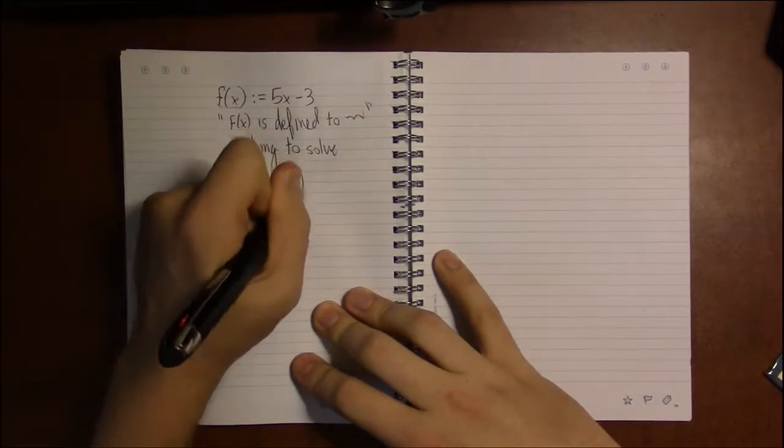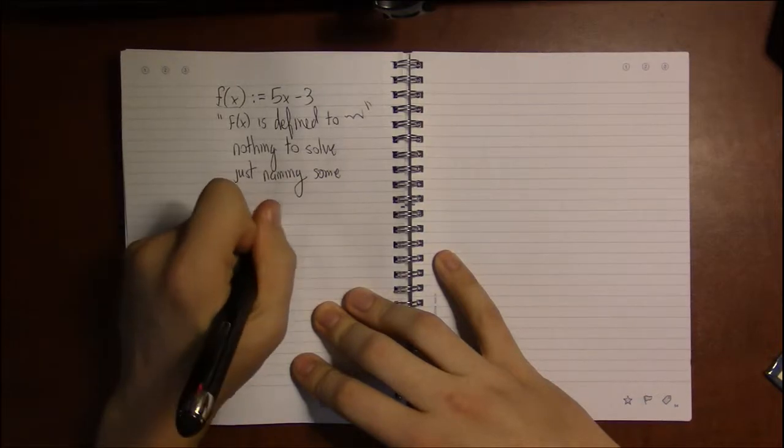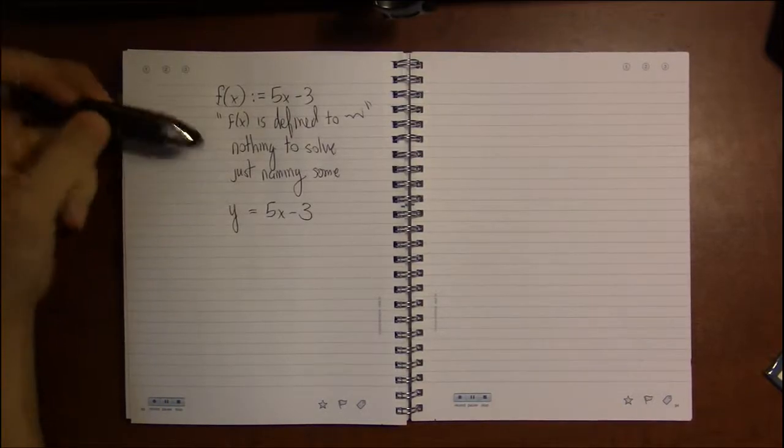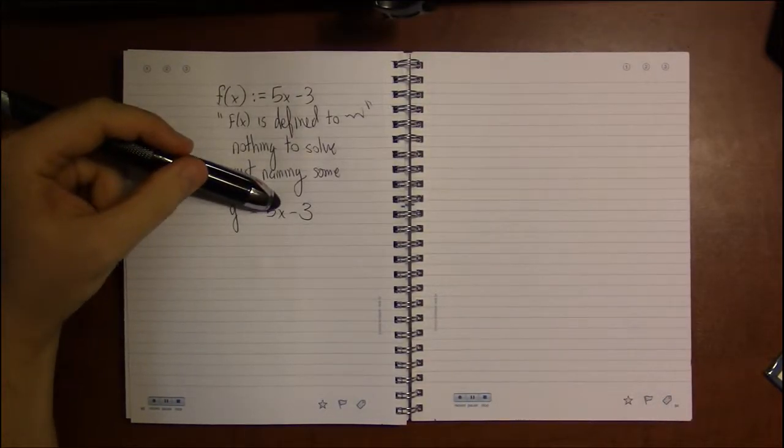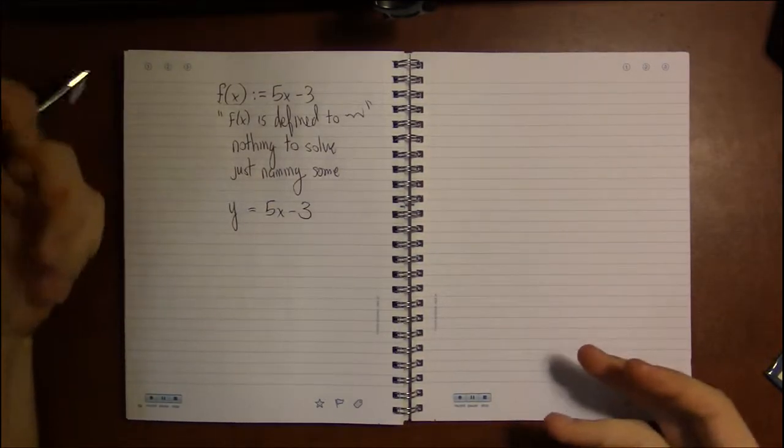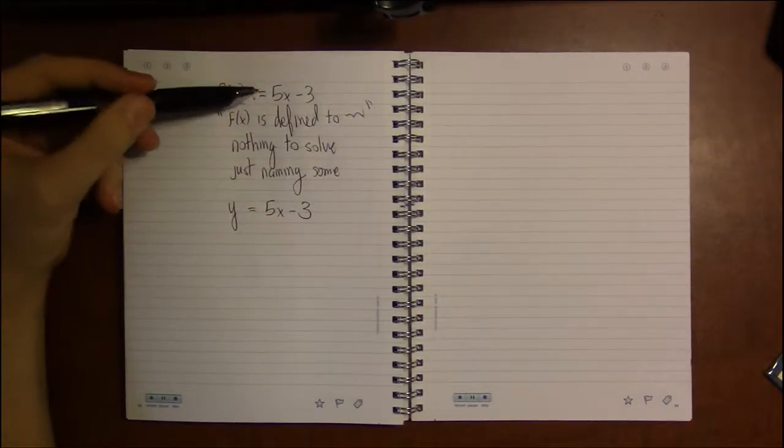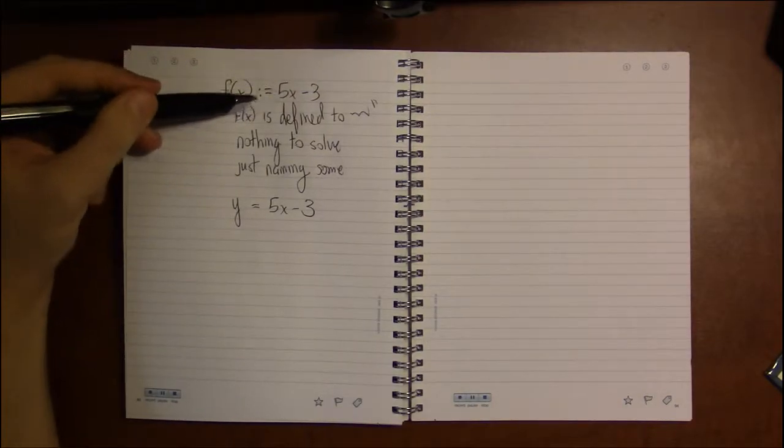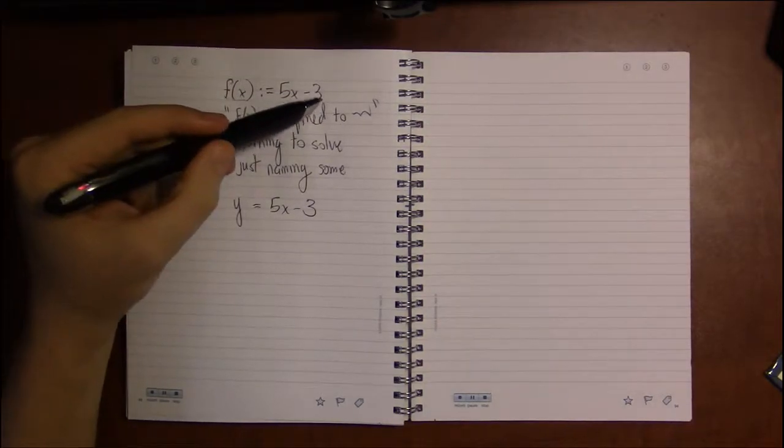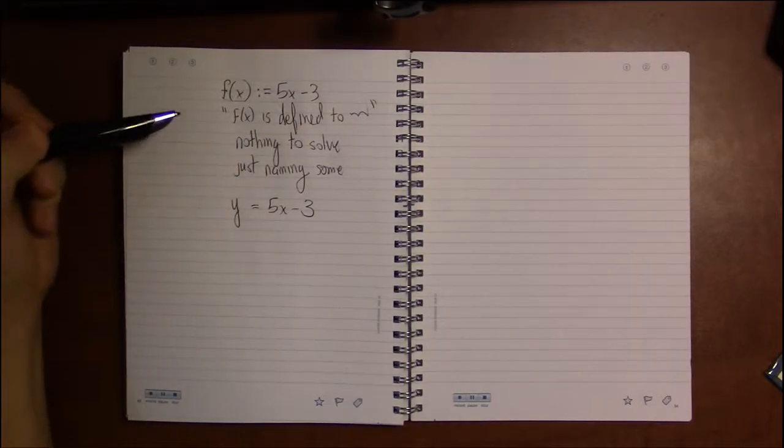Whereas before, when we were dealing with y's, this statement's kind of ambiguous. Is this your answer? Are you supposed to solve for x, get x by itself? No, what's going on with this equal sign? Am I supposed to solve this? Do I leave it as it is? What's happening here? So with this colon equals, I'm trying to make this a bit more clear to say don't solve anything here, just take whenever you see f of x, just take that to be shorthand for 5x minus 3.